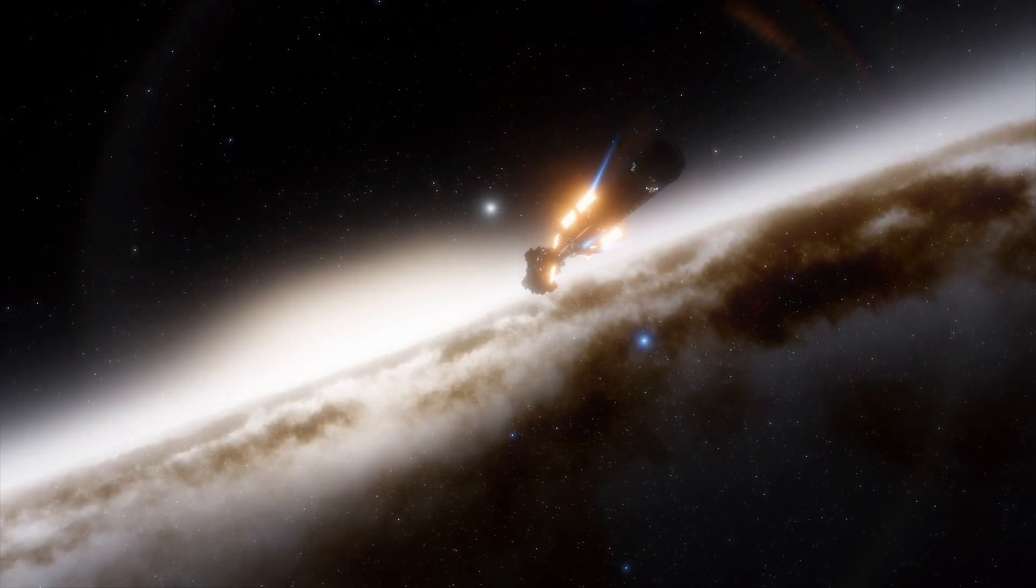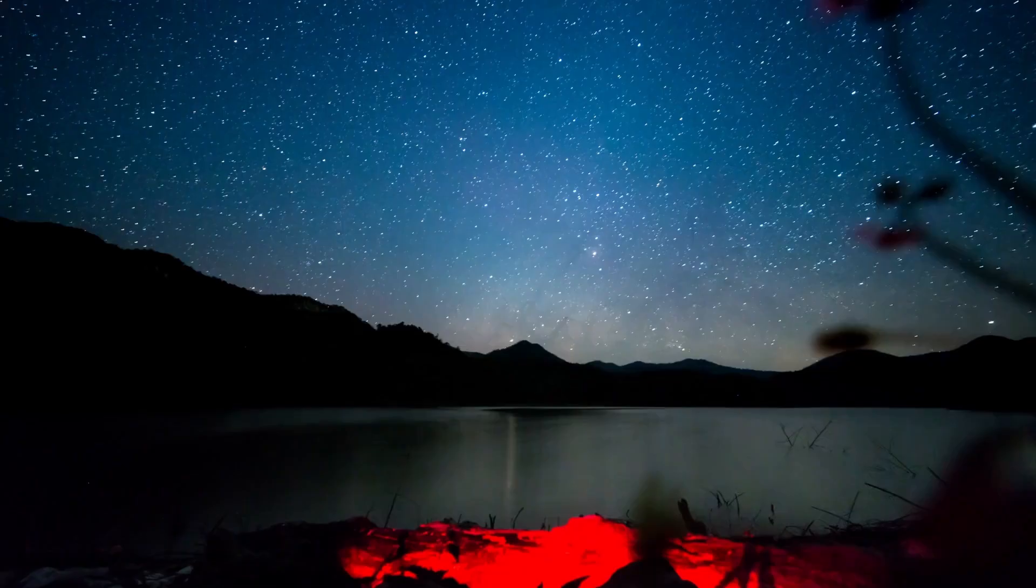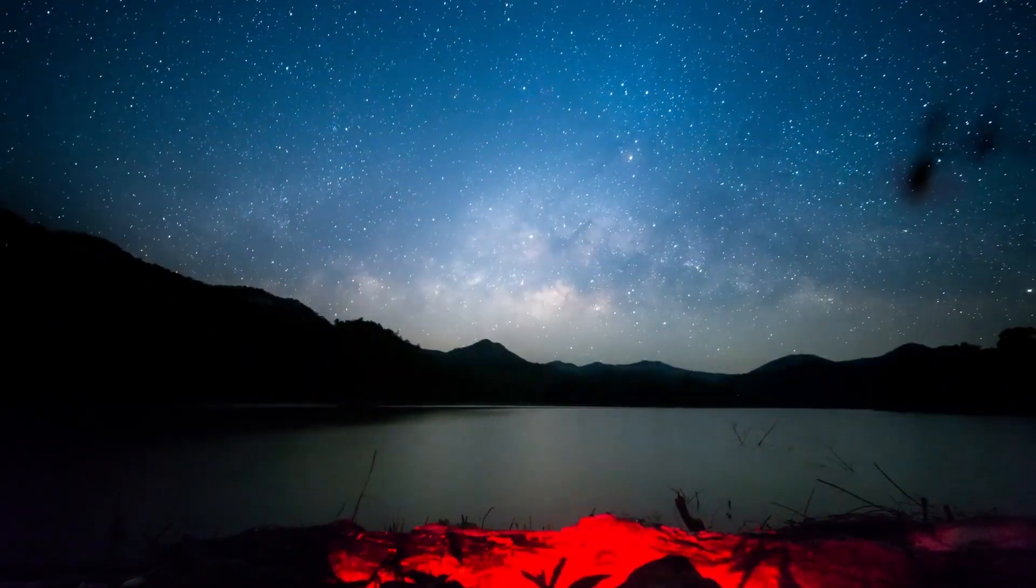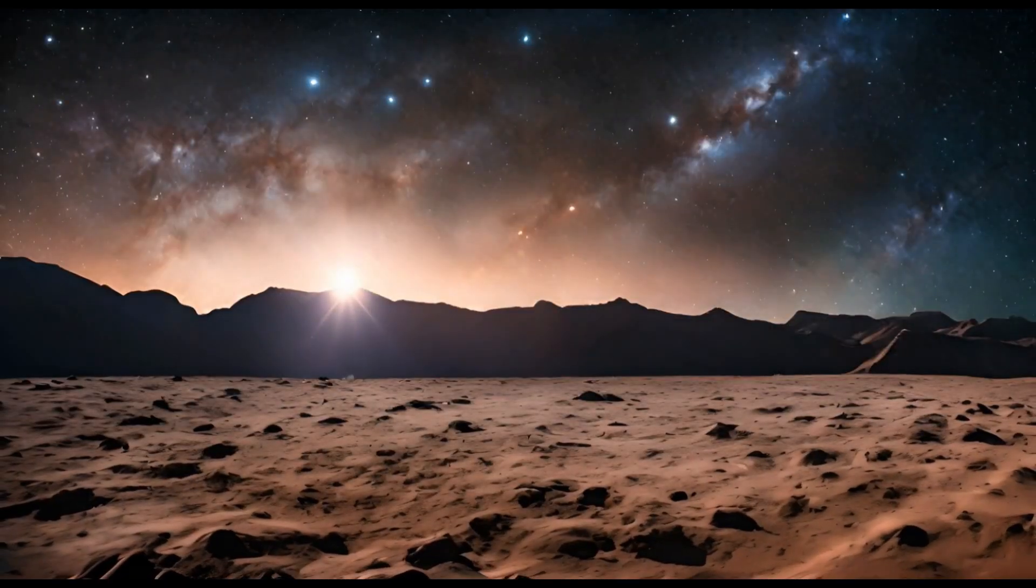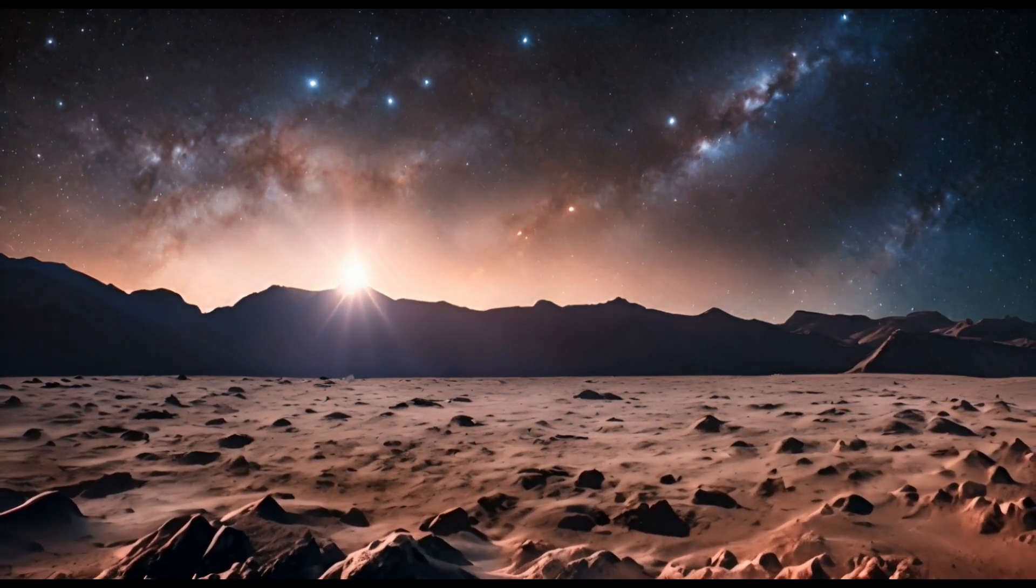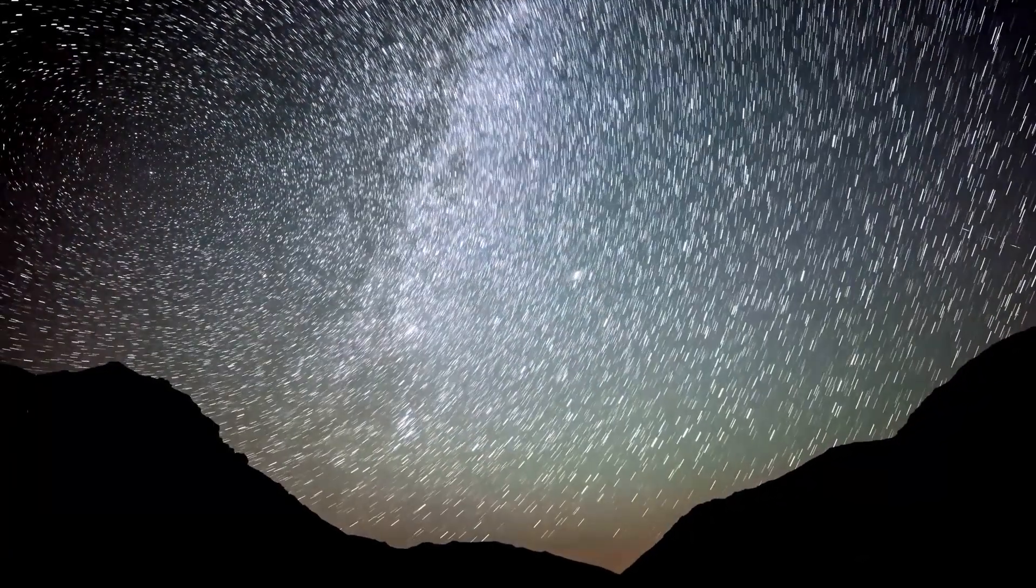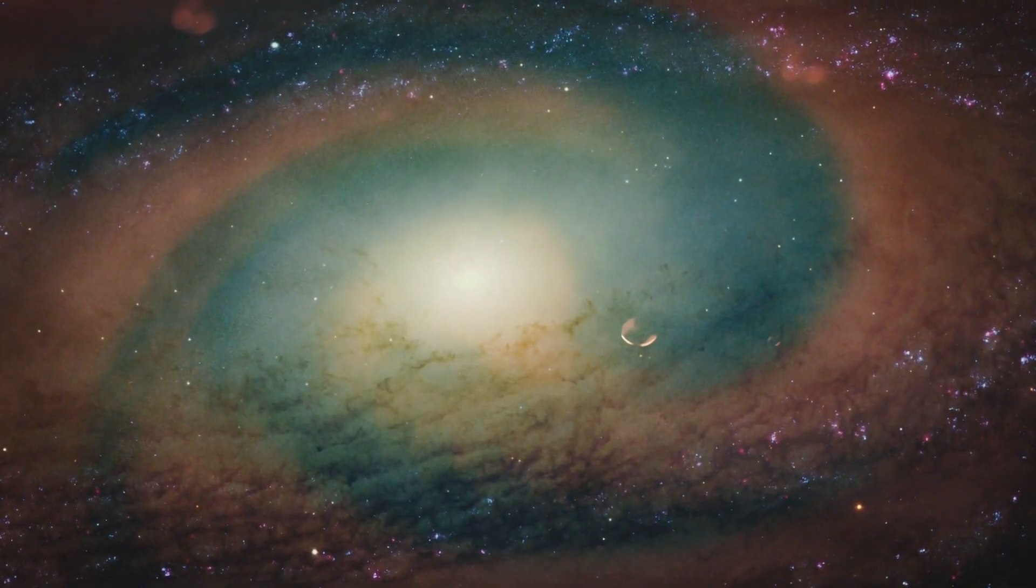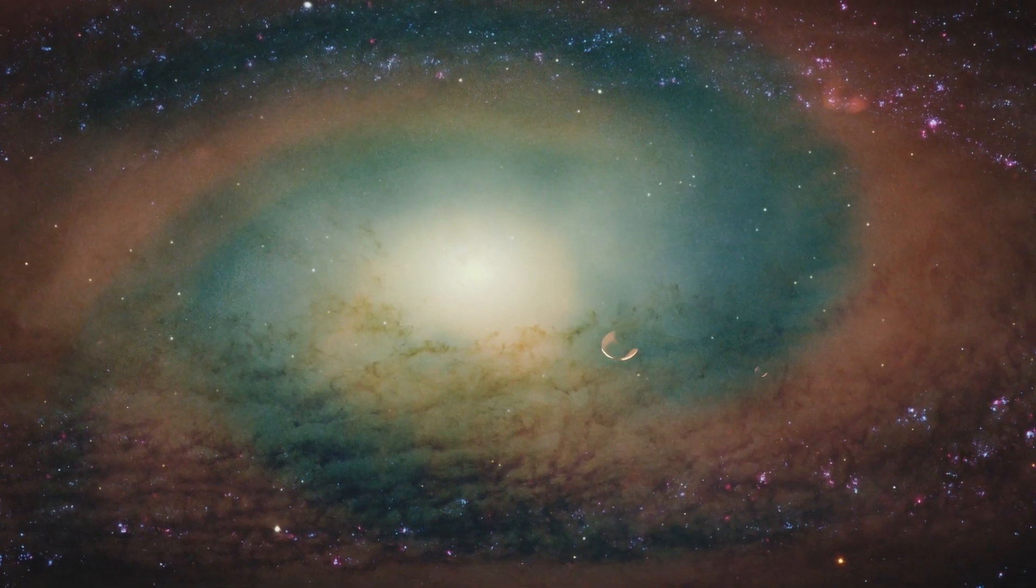Betelgeuse, the enormous red supergiant star in the Orion constellation, has long been a subject of fascination and intrigue for astronomers and sky watchers alike. Despite its relative proximity in cosmic terms, just 640 light years from Earth, its evolution is a window into the dramatic life cycle of massive stars. A red supergiant like Betelgeuse is in the final stages of stellar evolution, having exhausted the hydrogen in its core and transitioned to burning heavier elements. This phase of life is marked by dramatic changes in size, brightness, and behavior, all of which make Betelgeuse a key object of study.